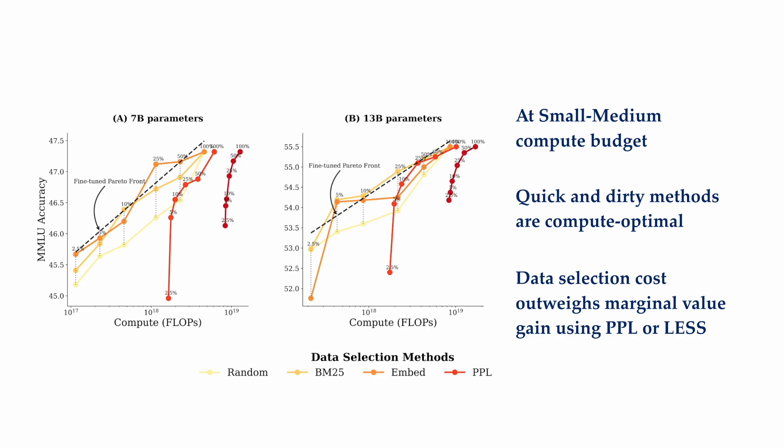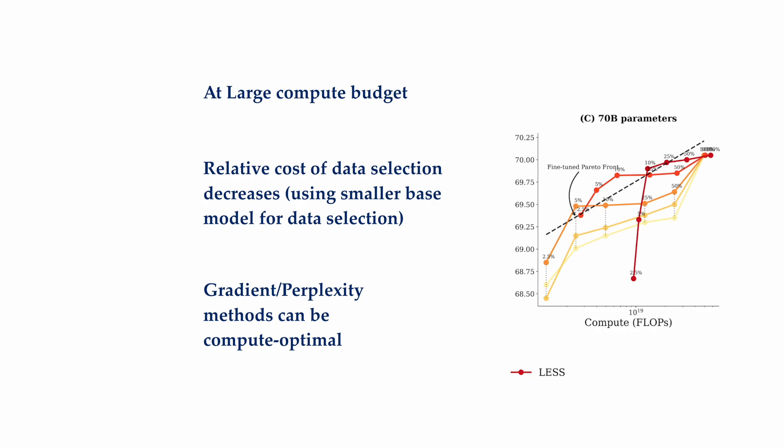Our 7b and 13b model results, as shown in the first two columns, show that at a small to medium compute budget, cheap methods, including lexicon method, embedding method, significantly outperformed perplexity and gradient methods. This suggests that the marginal benefits one can get from using a more sophisticated data selection method does not outweigh its cost in selecting these high valuable data. Compared to the 7b result, at the 13b model size, while cheaper methods are still being preferred, expensive methods are becoming more and more competitive.